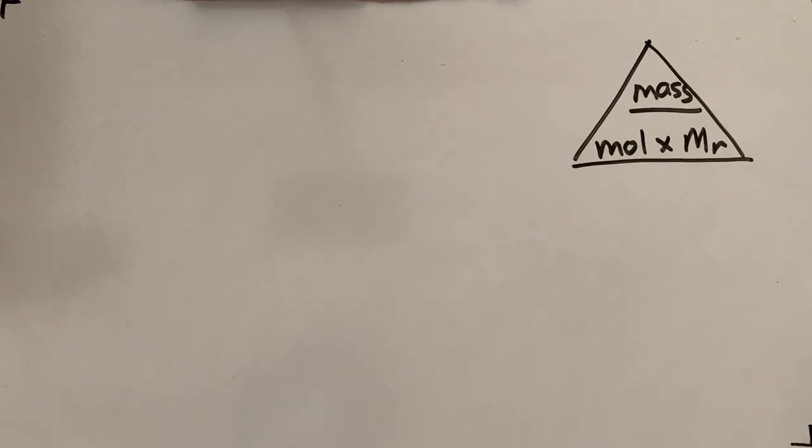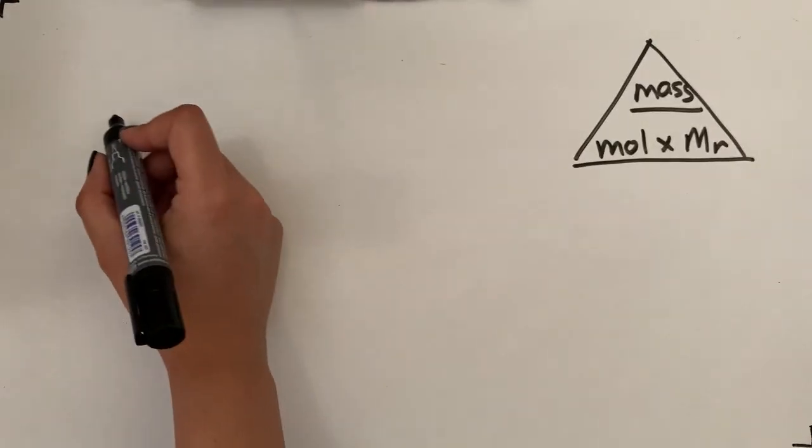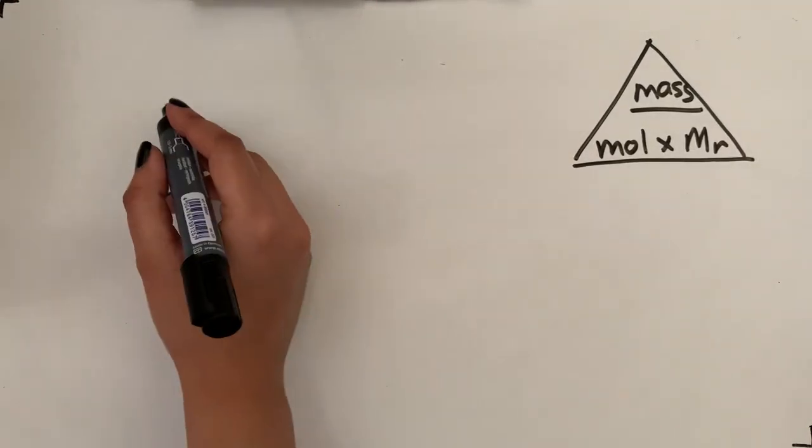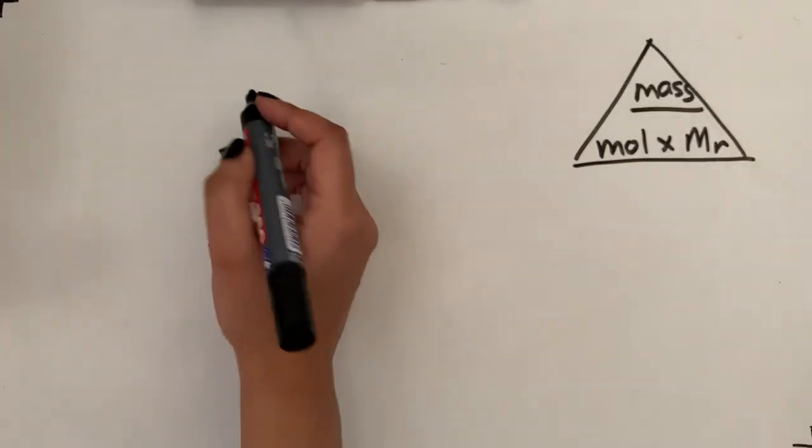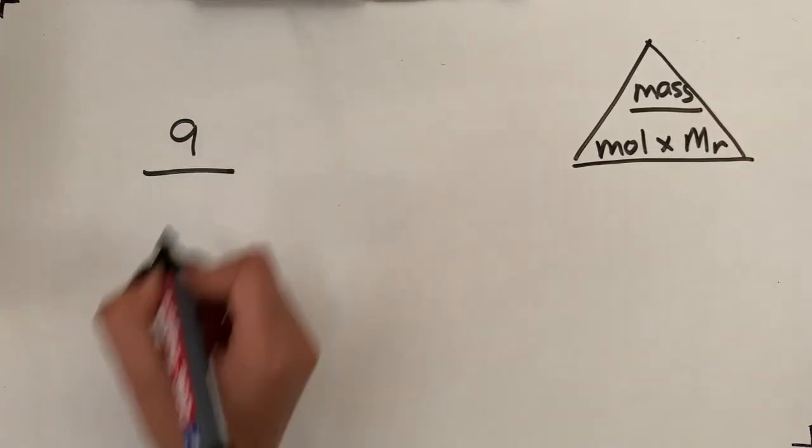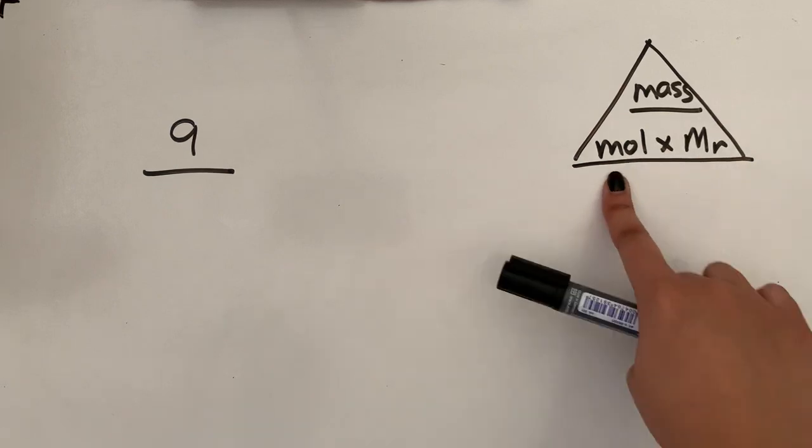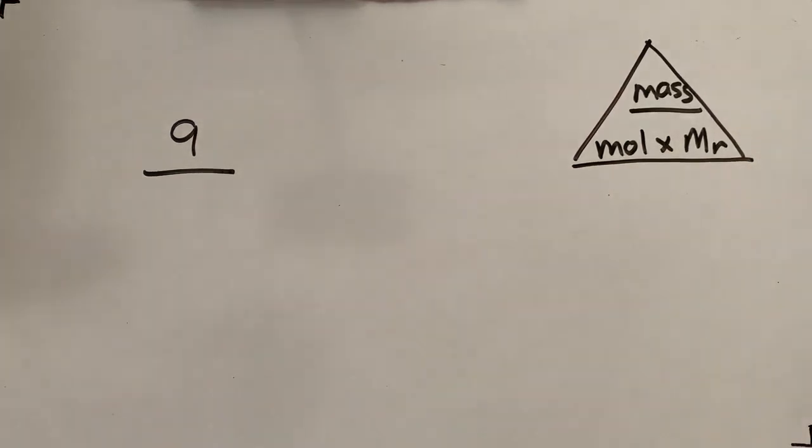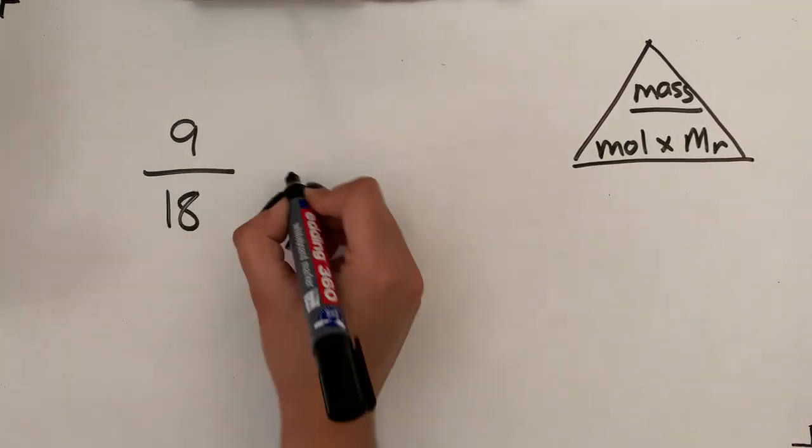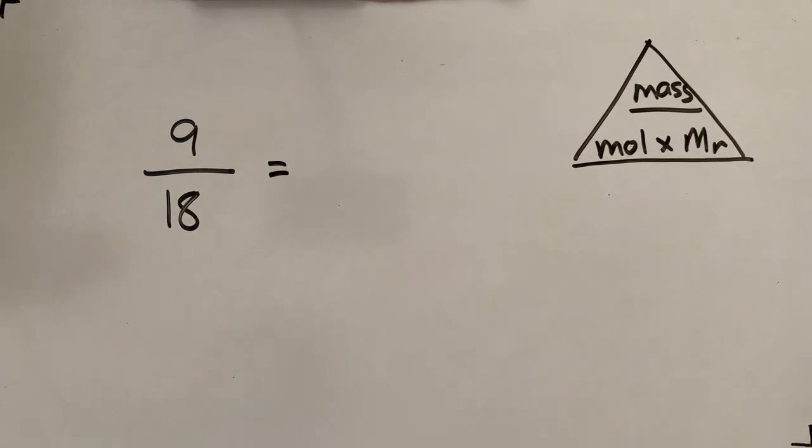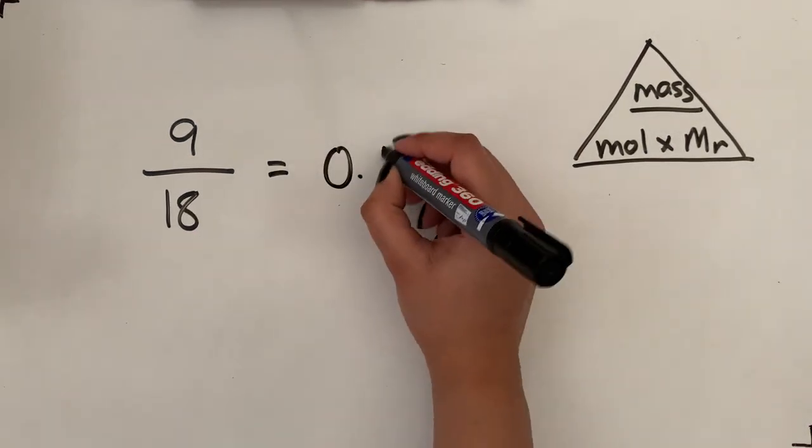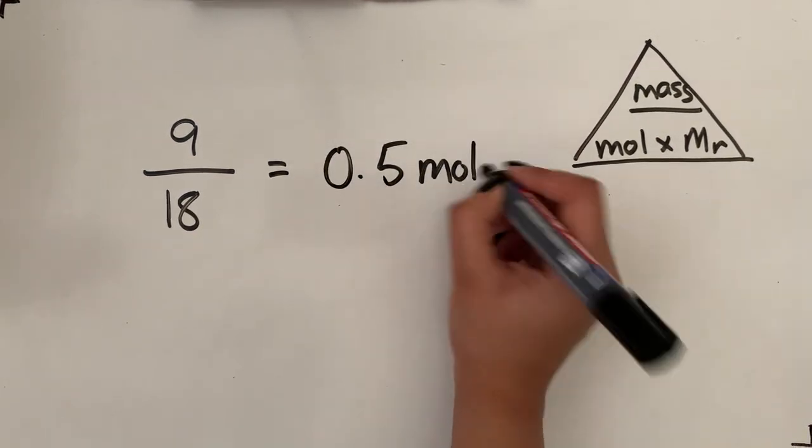I'll just do question number 1, so 9 grams of H2O. Calculate the number of moles in 9 grams of H2O. So 9 grams is the mass, so make sure your mass is always in grams, so you do 9 divided by the molar mass and that's going to give us the moles. So 9 divided by the molar mass of water which is 18, so 9 divided by 18, you should get 0.5 moles.